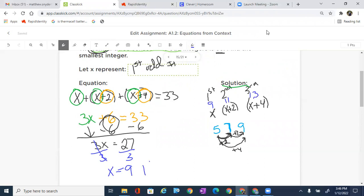So X is our first odd integer. And based off of that, we were able to find our other ones: nine, 11, and 13.